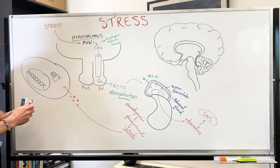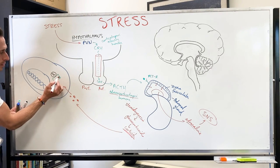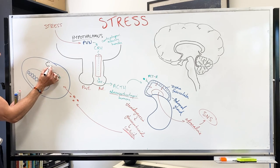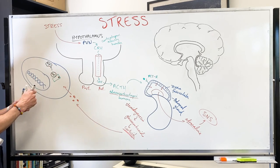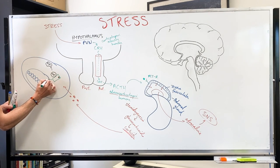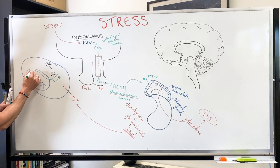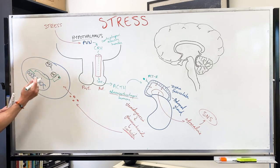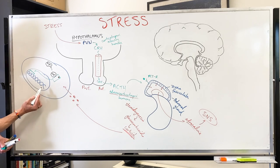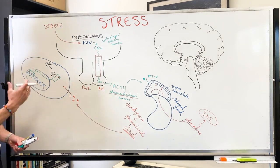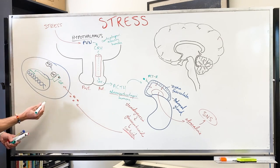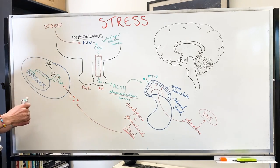The glucocorticoid receptor has a binding pocket and is part of a complex with other proteins — one of the most important is a heat shock protein (HSP). Once cortisol binds, the HSP disassociates. Now the glucocorticoid receptor is free to jump into the nucleus and bind to very specific promoters called glucocorticoid response elements, which help promote transcription of DNA — though it can sometimes repress it as well.